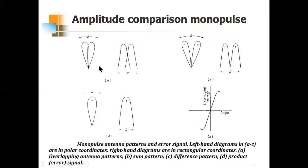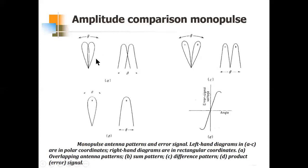The two beams in the figure are squinted or offset — both pointing in two different directions. The left-hand diagrams are in polar coordinates and the right-hand diagrams are in rectangular coordinates; both representations convey the same meaning. The main difference between amplitude comparison and phase comparison monopulse is that in amplitude comparison, the two beams are sent in a squinted manner facing two different directions, whereas in phase comparison monopulse both beams are sent in the same direction. In amplitude comparison monopulse, two squinted beams are sent from one single antenna — imagine a parabolic reflector antenna with two different feeds.